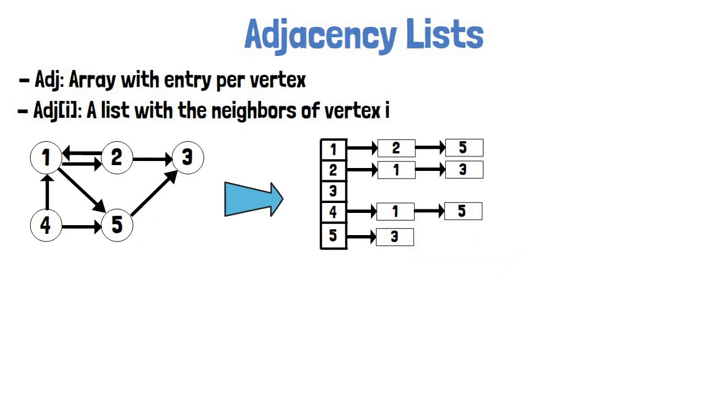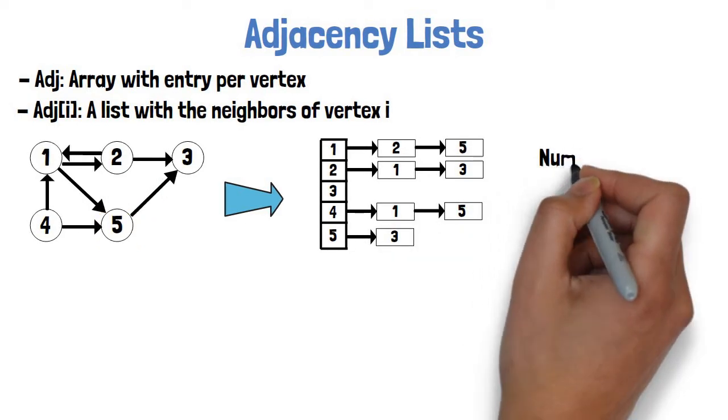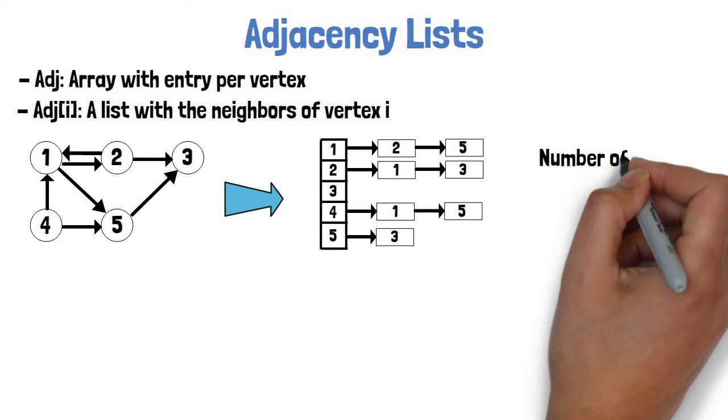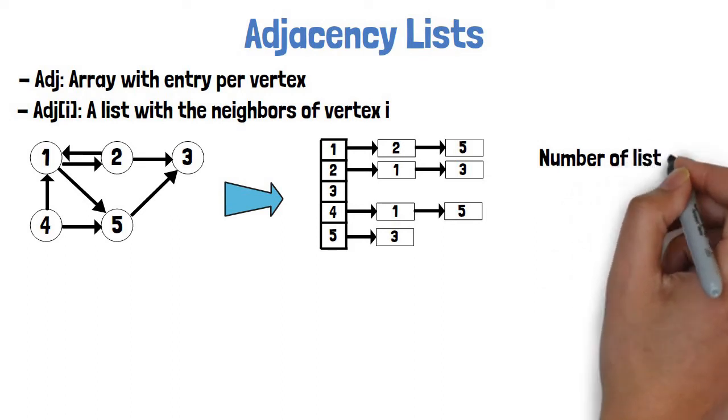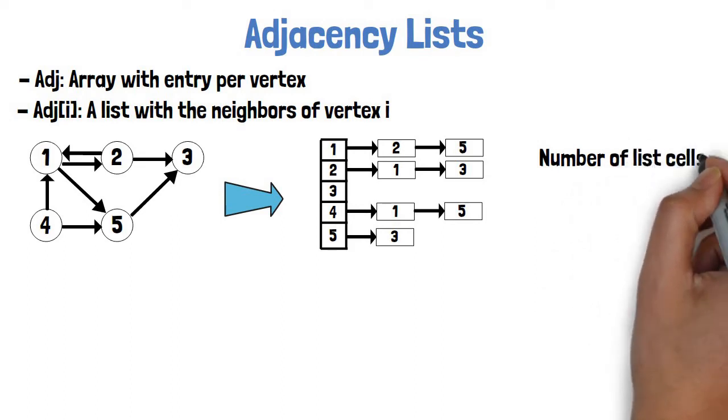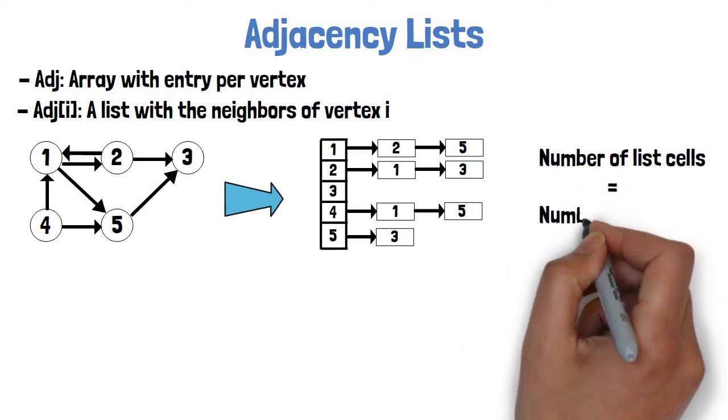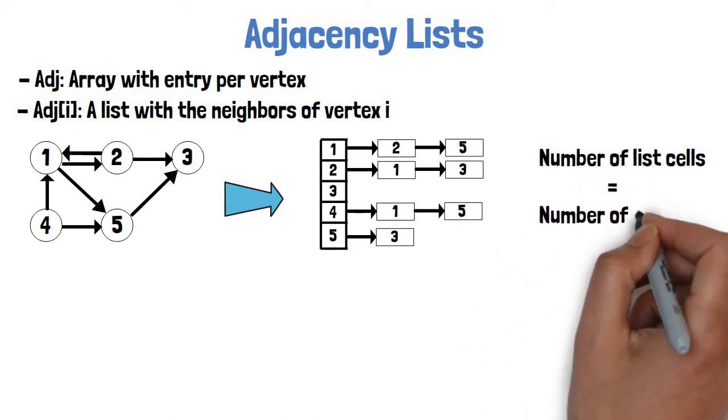An interesting observation is that the total number of list cells equals the number of edges in the graph.